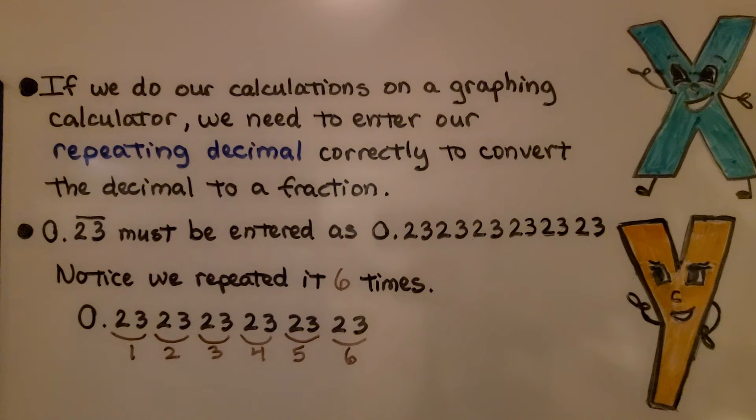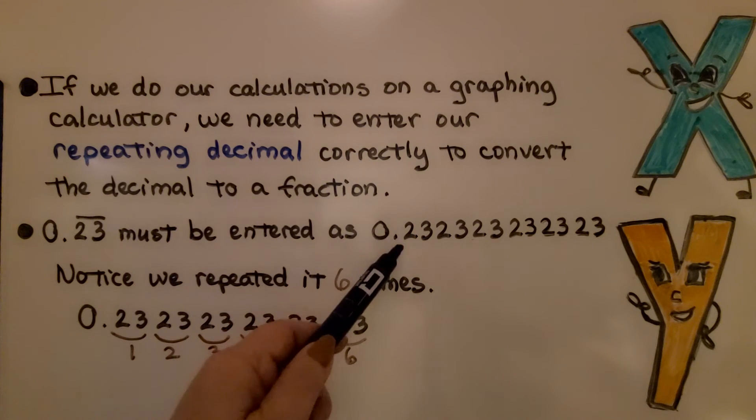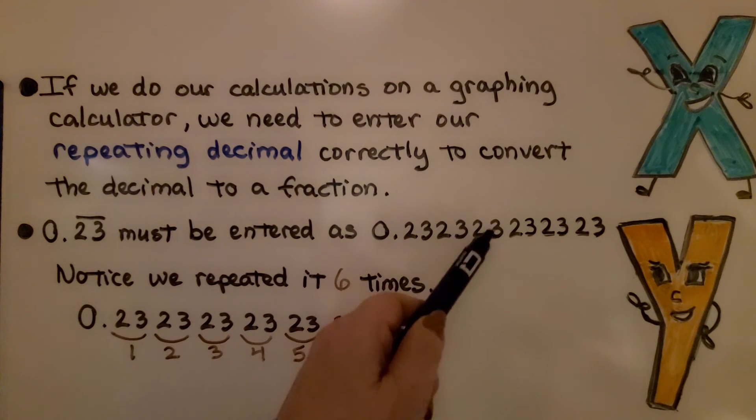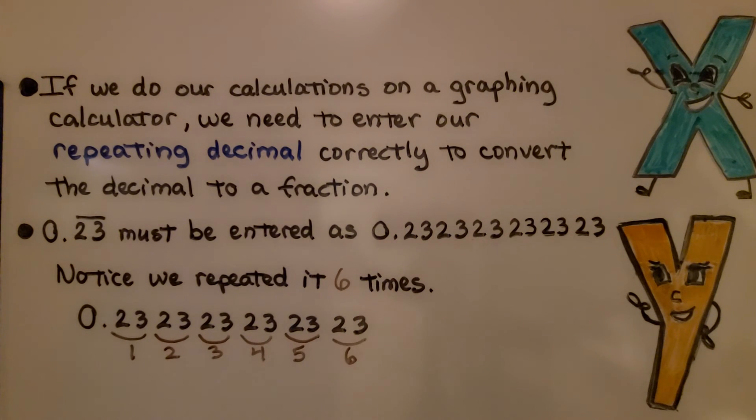If we do our calculations on a graphing calculator, we need to enter our repeating decimal correctly to convert the decimal to a fraction. So, before, remember we had 0.23 and the 2, 3 repeated. This must be entered as 0.2323232323232323. Notice we repeated it 6 times. 1, 2, 3, 4, 5, 6. If we enter it into our graphing calculator like this, then we'll have entered it correctly in order to convert the decimal to a fraction.